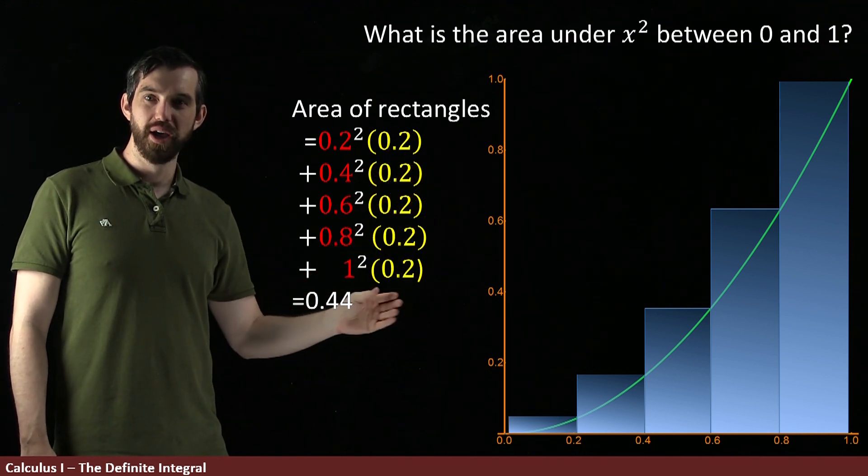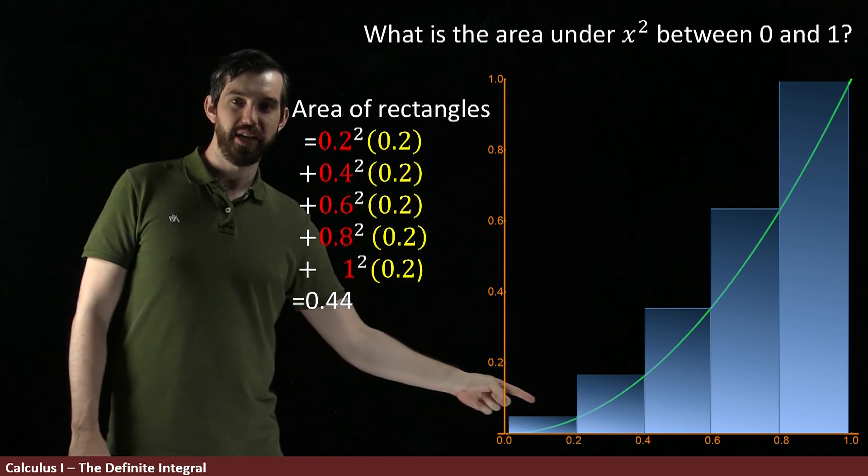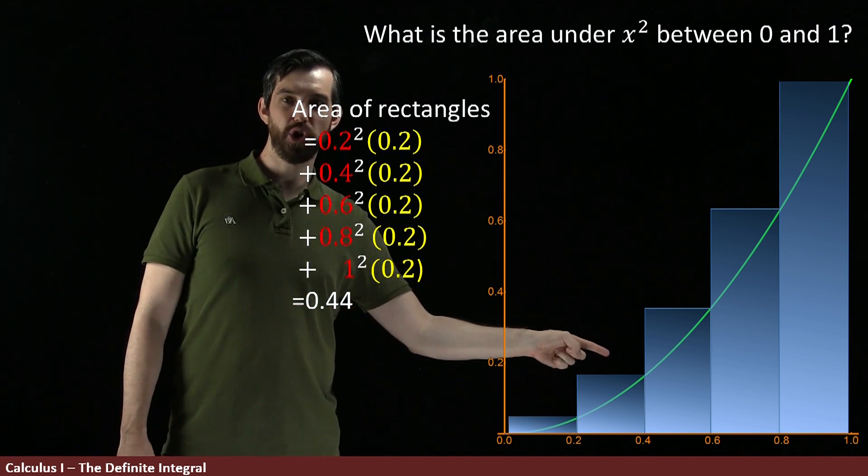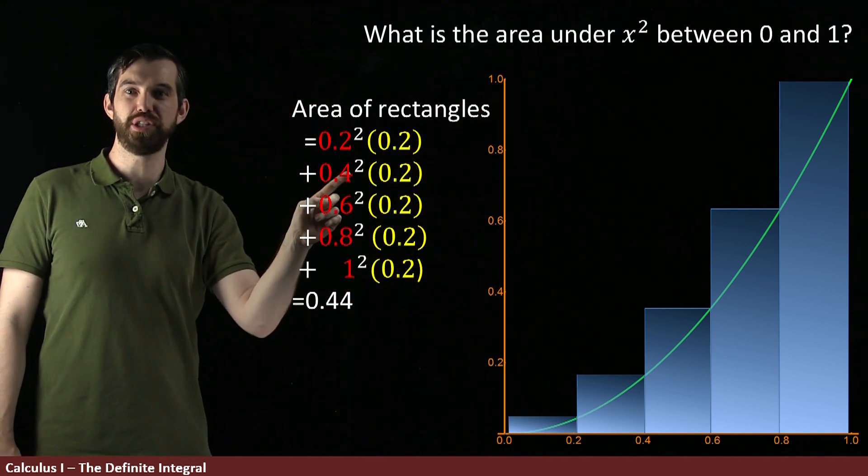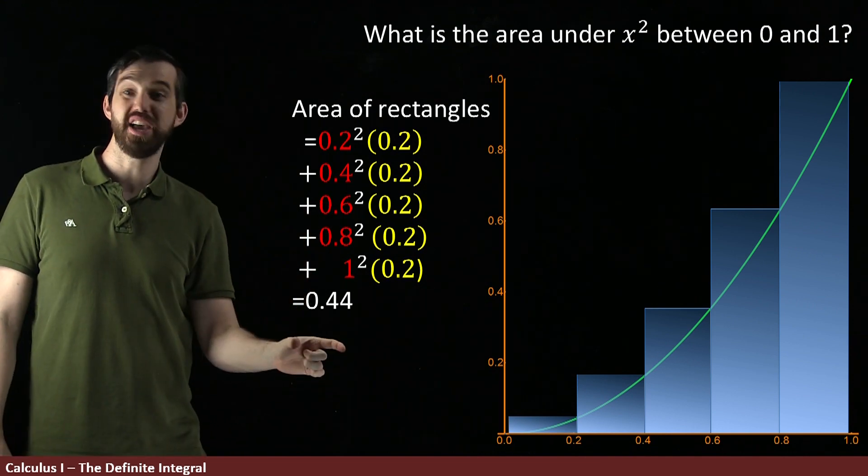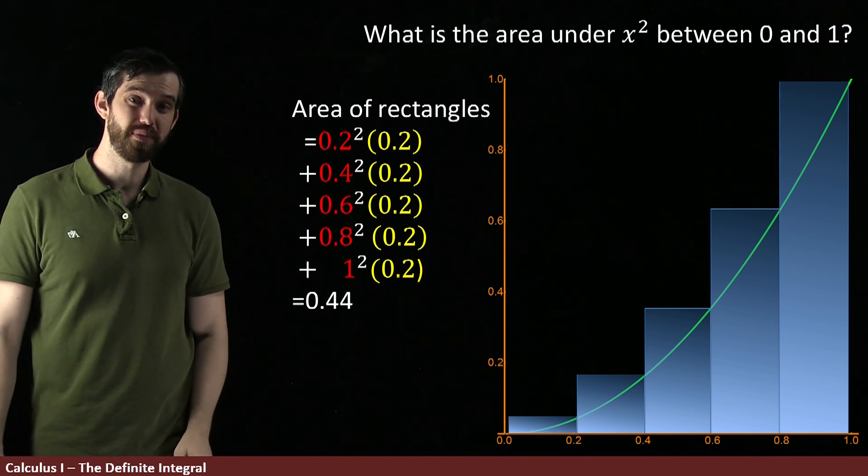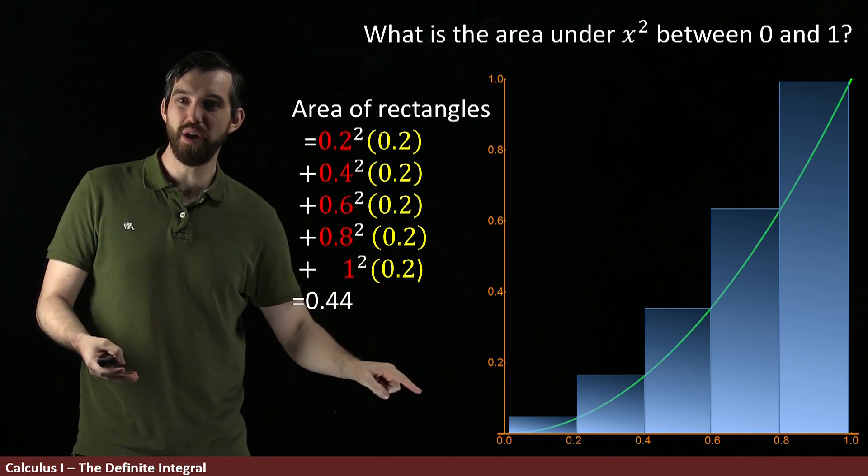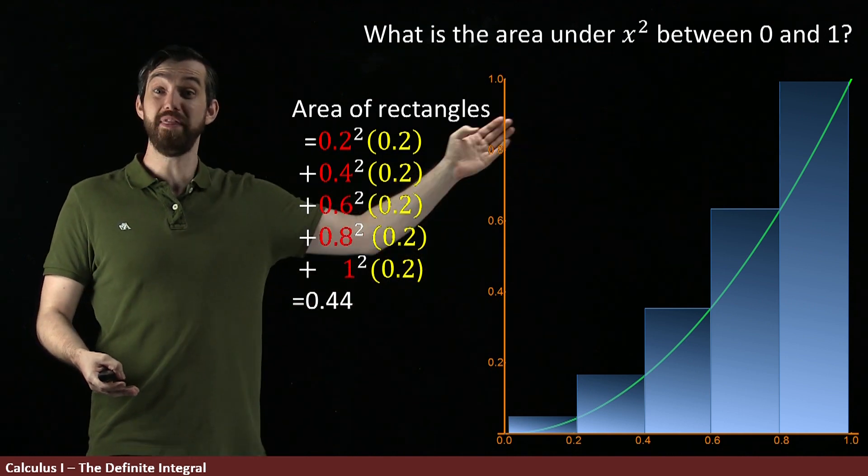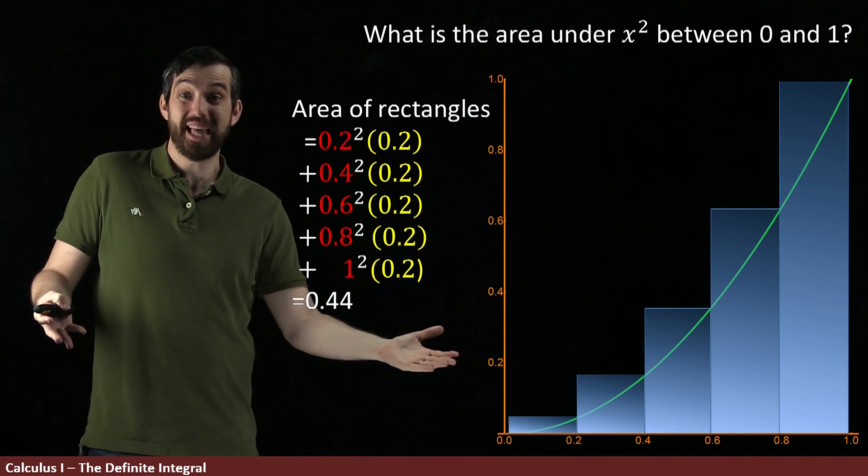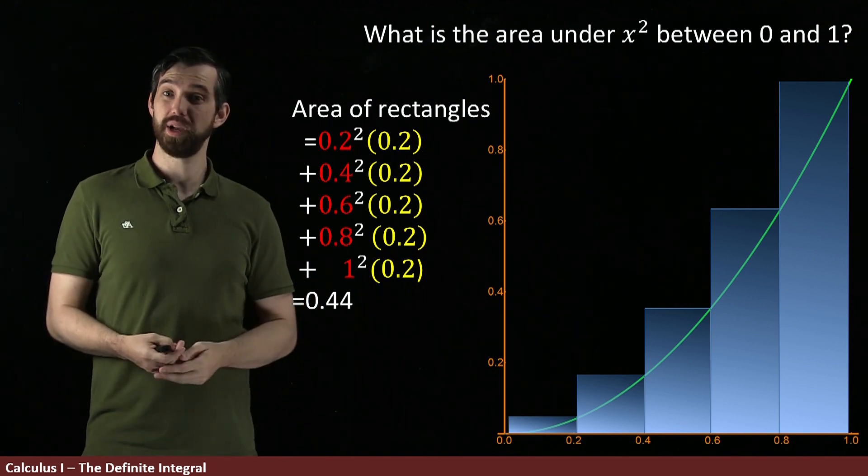Notice that the width is the 0.2 all the way along, but the height of them changes. In this case where I'm using 0.2, it goes to 0.2 squared; here is 0.4, and because it's x squared it goes to 0.4 squared, and so on. Then I can add all those up and I get apparently it's 0.44. This doesn't seem terrible, by the way—if you imagine the triangle that went from 0 to 1, that triangle would have area a half, and this looks like a little bit less than that triangle, so it seems kind of reasonable.